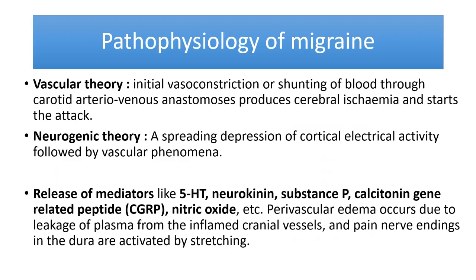The pathophysiology of migraine involves two theories: vascular theory and neurological theory. In the vascular theory, initial vasoconstriction or shunting of blood through the carotid arteriovenous anastomosis produces cerebral ischemia and starts the attack. This is followed by spreading depression of cortical electrical activity, then vascular phenomena, releasing inflammatory mediators like 5-HT, neurokinin, substance P, calcitonin gene-related peptide, and nitric oxide.